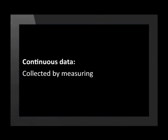Remember, continuous data is information that's collected by measurement. We usually round off continuous data because our equipment and our eyes are limited, and we can't measure things like time, distance and temperature to more than a few decimal places.